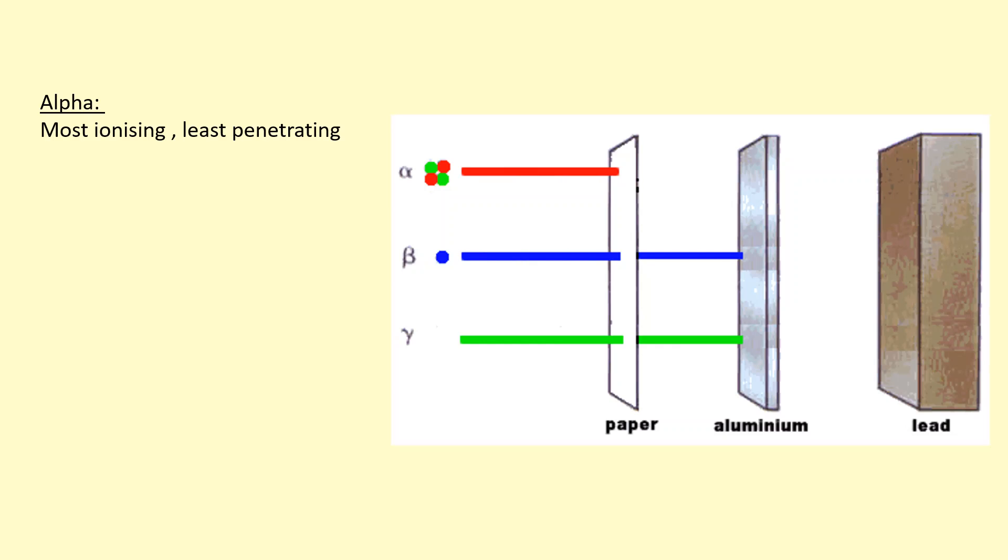The different types of ionizing radiation we've learned about. Alpha is the most ionizing. That also means that it's got the least penetration. So it can be stopped by a thin piece of paper or foil.